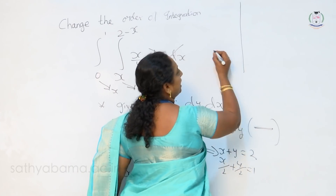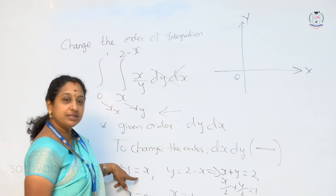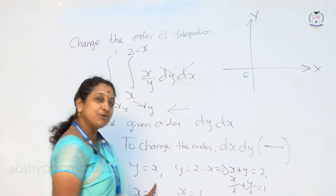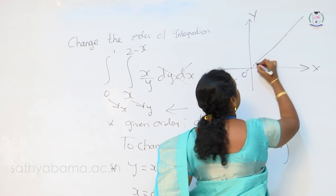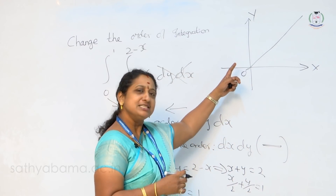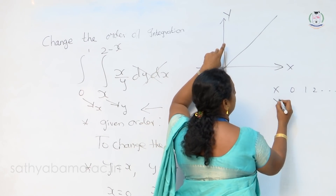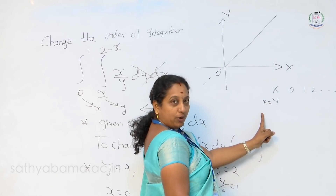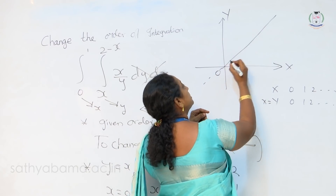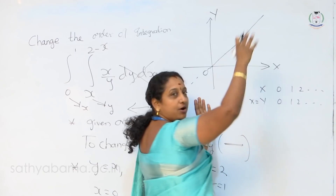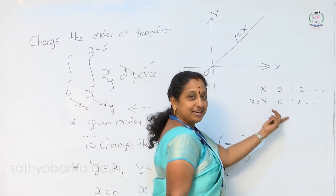Just draw a rough diagram — x axis, y axis. First, plot the line x is equal to y. It is the perfect bisector of the first quadrant. If you have any doubt, just randomly allocate some points. If you substitute x equal to 0, 1, 2, the relation x is equal to y gives y equal to 0, 1, 2 respectively. Keep substituting points: (0,0), (1,1), (2,2), (3,3) — just join the line. It represents the line y is equal to x.